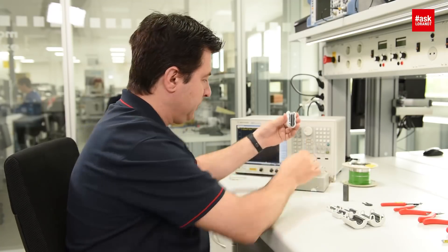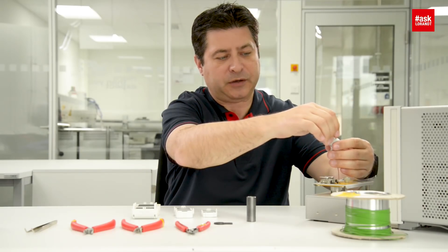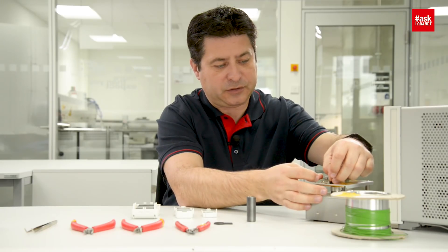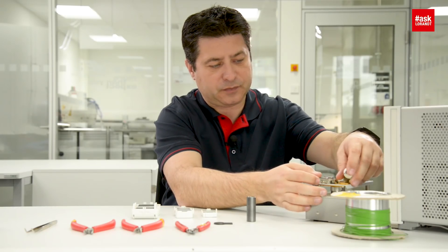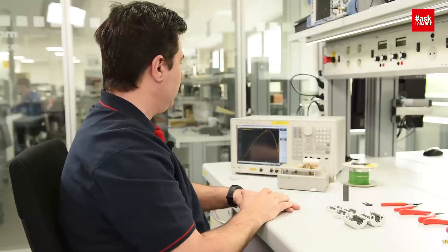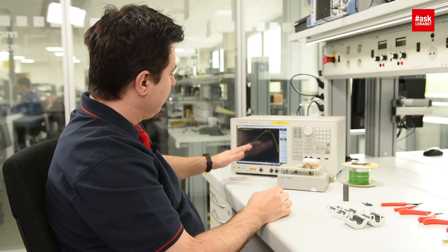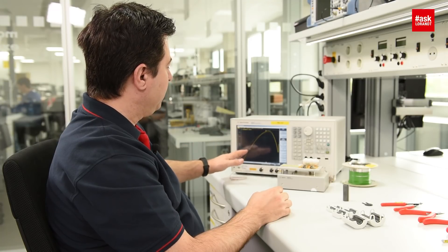Now I take the splitted one, take the same wire, close it and connect it to the fixture. Now you can see some difference, of course, in the lower frequency here in this area up to 50 MHz.